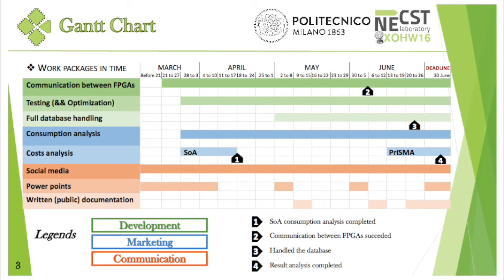The Gantt chart is a bar chart that helps us to show our project schedule. This way it is easier to understand the planning of the work packages in the following weeks, with starting and finishing dates, and also highlighting when we expect to reach our milestones. This task organization is a direct consequence of both the difficulties we think we might meet for the development phase and the dependencies between the work packages.